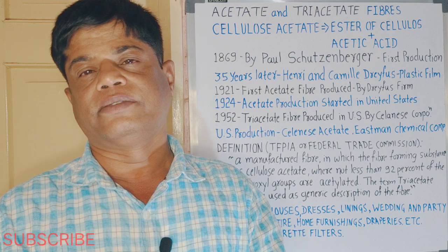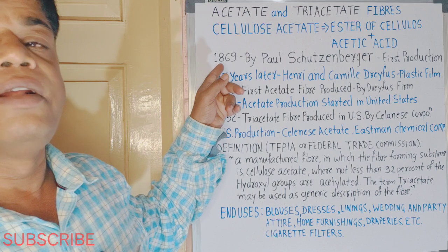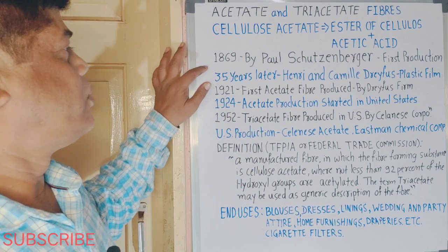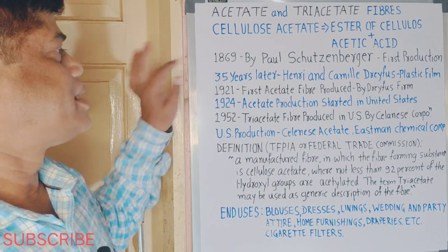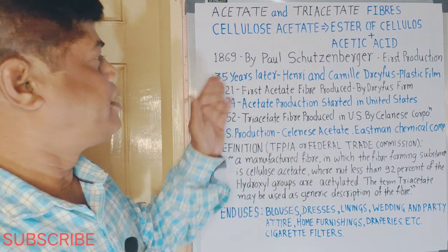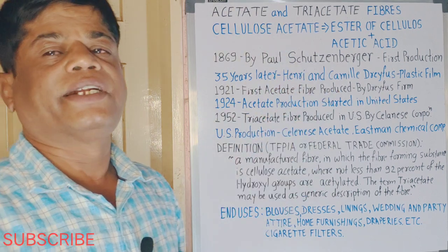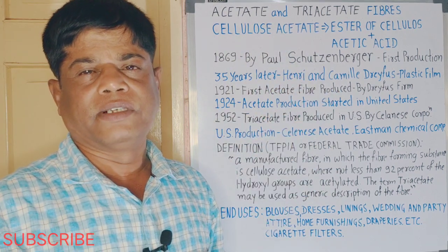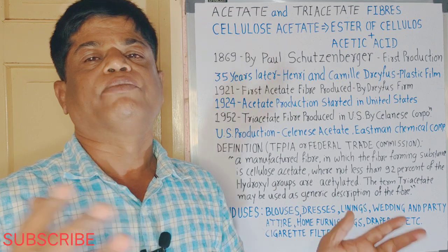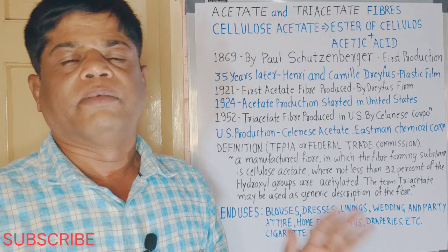This research started more than 150 years back — in 1869. That is the year Paul Schutzenberger started the first production. They identified through research that a new fiber could be produced, and so first production started.